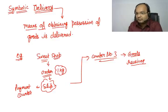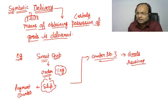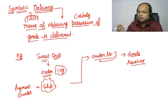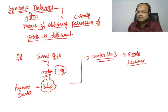Symbolic delivery means the means of obtaining possession of goods — that is the custody. When the means of getting the goods — the thing you show to obtain possession — is delivered to you, that is symbolic delivery. So in the sweet shop, there was a contract of sale. The slip given to me against payment will be called symbolic delivery, because by showing that slip I can receive the goods from counter number 3.